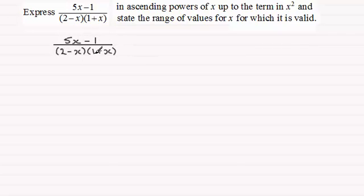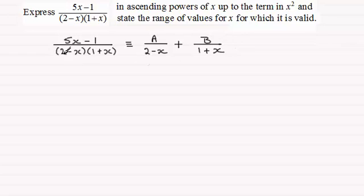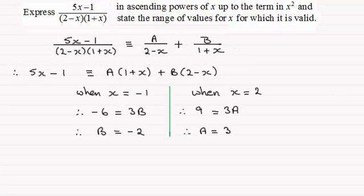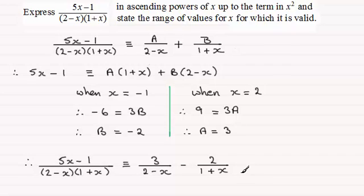Expressing this in partial fractions — because these are two linear factors in the denominator — it's going to give rise to partial fractions of this form, where A and B are constants. To find A and B, we multiply both sides by the denominator, giving us 5x minus 1 is identical to A times 1 plus x plus B times 2 minus x. We choose appropriate values of x to make each bracket zero: x equals minus 1 and x equals 2. When x is minus 1, B equals minus 2; when x is 2, A equals 3.